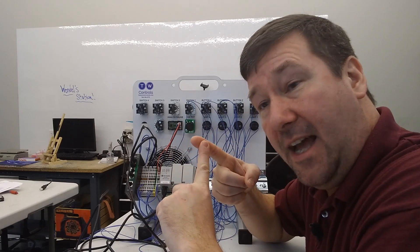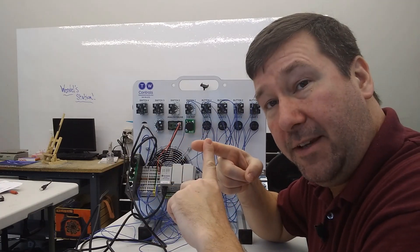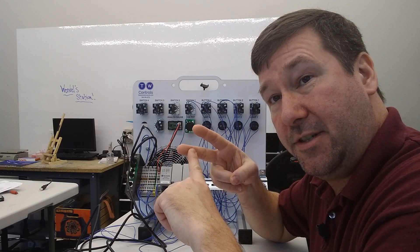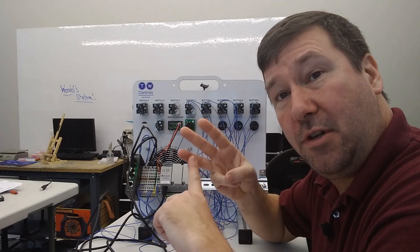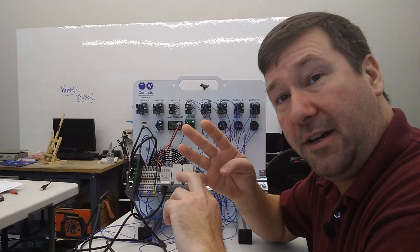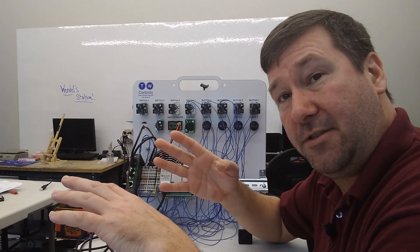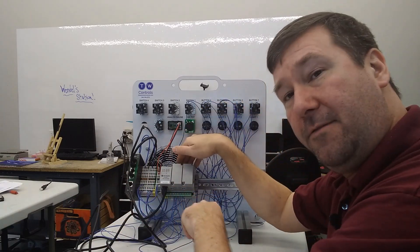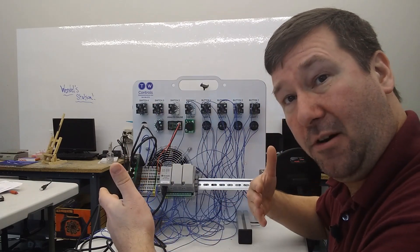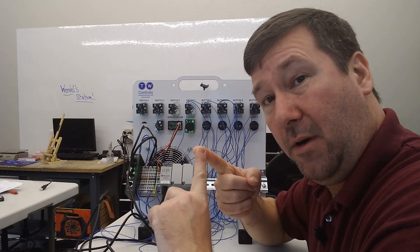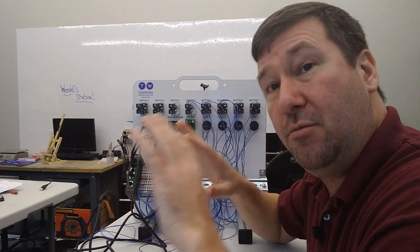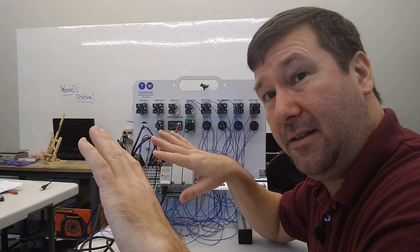So remember: a Direct Contact goes and looks for a 1 at whatever address you have in that instruction. A Reverse Contact goes and looks for a 0. A coil with true conditions will write a 1 to whatever address you have in that instruction, and a false coil will write a 0. And remember, it only writes to the variables — it does not read physical inputs or write to physical outputs during program execution. That is done during the input and output part of the scan cycle. If you stick to 'go look for a 1, go look for a 0, go write a 1, go write a 0,' then you will be hours — maybe years — ahead.